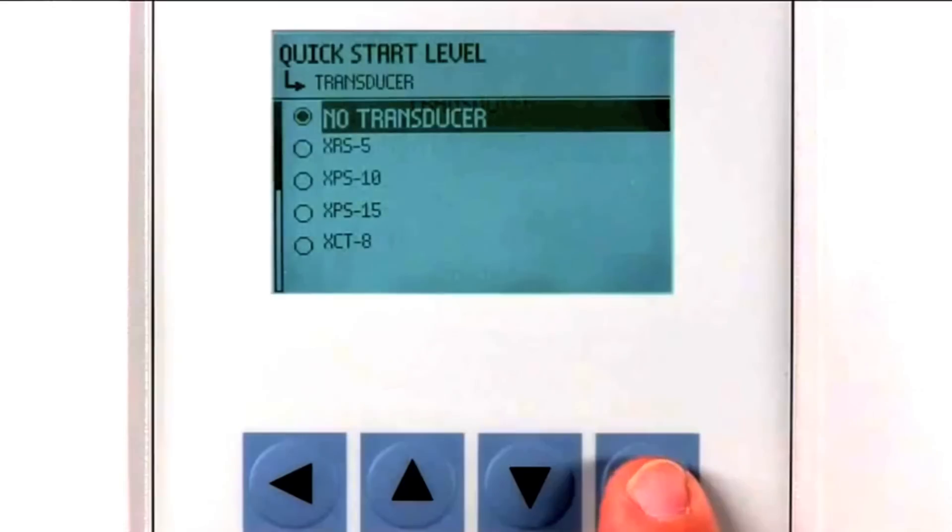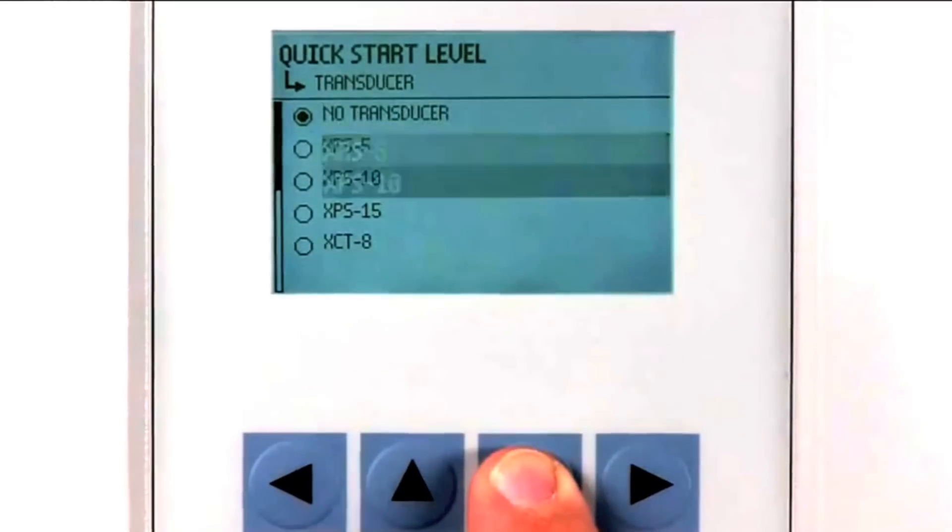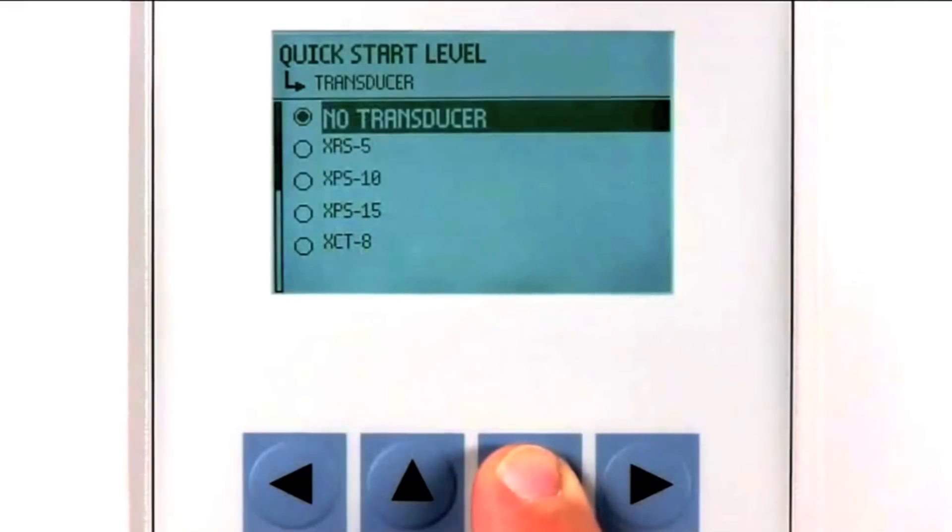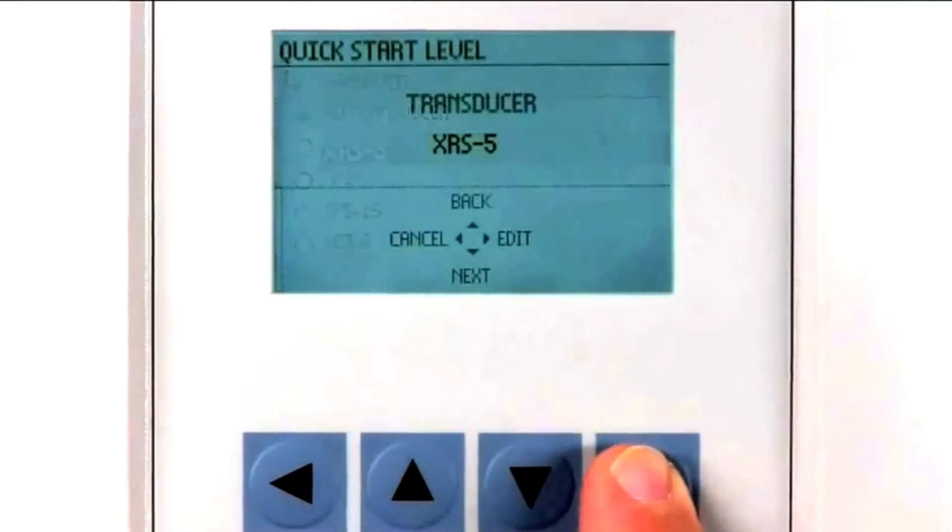Press the right arrow to access the list of Echomax transducers. Press the right arrow key to select your transducer.